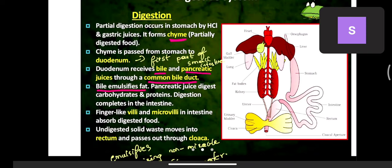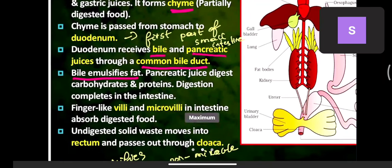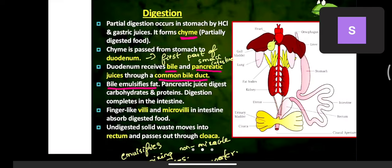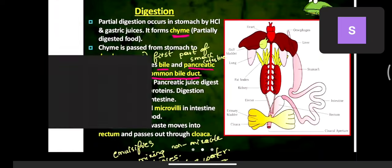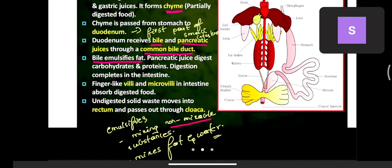Digestion takes place in two stages — first in the stomach, then in the intestines. Bile emulsifies fat — emulsification is the process of mixing two non-mixable substances like fat and water. Pancreatic juice digests carbohydrates and proteins. Digestion completes in the intestine.